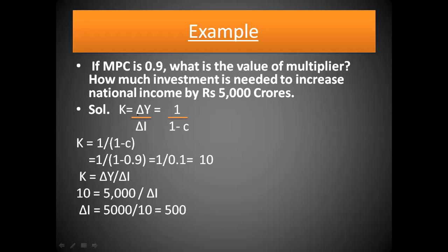Let's do an example. If MPC (marginal propensity to consume, represented by small c) is 0.9, what is the value of the multiplier, and how much investment is needed to increase national income by 5,000 crores? The formula is: K = ΔY/ΔI = 1/(1−c). Since MPC + MPS = 1, if MPC is 0.9 then MPS (s) is 0.1.